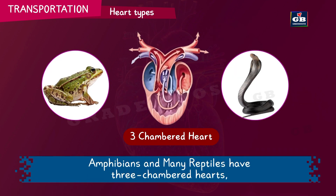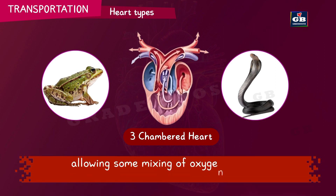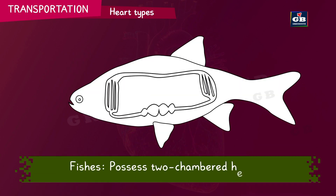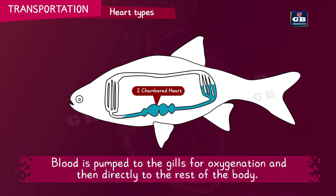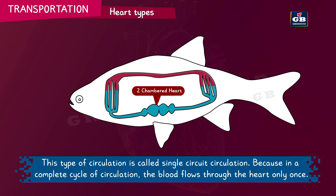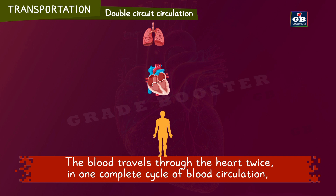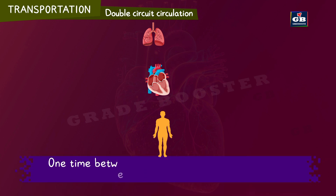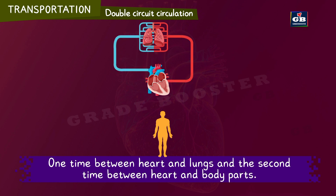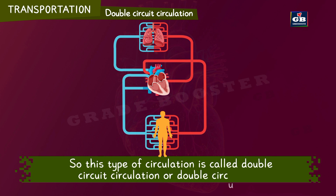Amphibians and reptiles have three-chambered hearts, allowing some mixing of oxygenated and deoxygenated blood. Fishes have two-chambered hearts; blood is pumped to the gills for oxygenation and then directly to the rest of the body. This is called single circuit circulation, because in a complete cycle the blood flows through the heart only once. In double circuit circulation, as seen in mammals, blood travels through the heart twice in one complete cycle — once between the heart and lungs, and once between the heart and body parts.